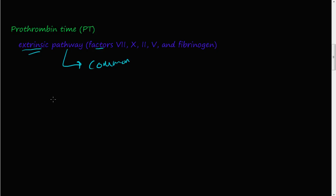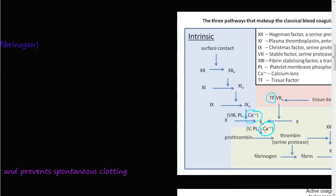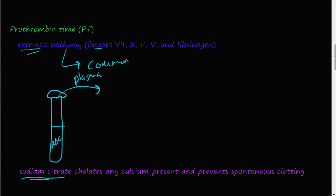For the PT test, someone draws your blood and spins it down so the red blood cells settle at the bottom and plasma sits on top. They take out that plasma and treat it with sodium citrate. Sodium citrate chelates any calcium in the plasma, which prevents spontaneous clotting — because the extrinsic pathway requires calcium.